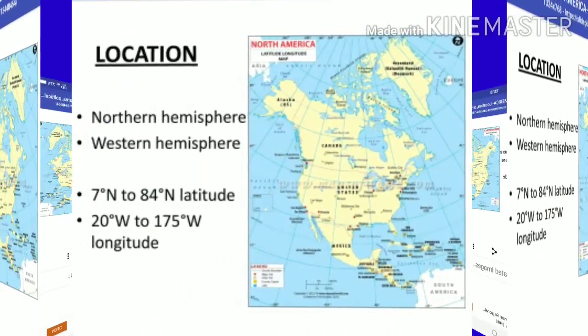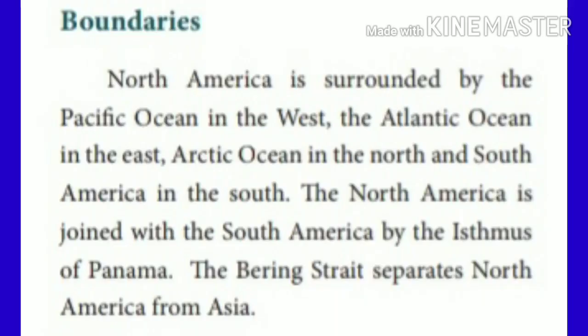Now we are going to see the boundaries of North America. North America is surrounded by the Pacific Ocean in the west, the Atlantic Ocean in the east, the Arctic Ocean in the north, and South America in the south. North America is joined with South America by the Isthmus of Panama. The Bering Strait separates North America from Asia.